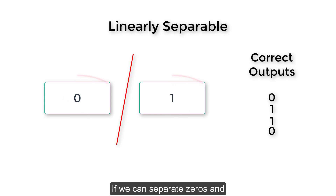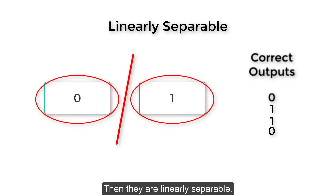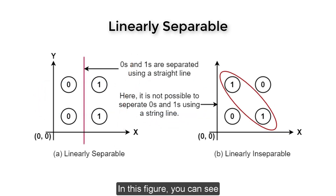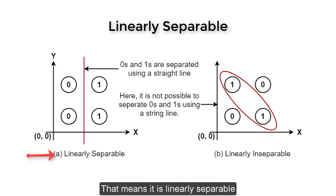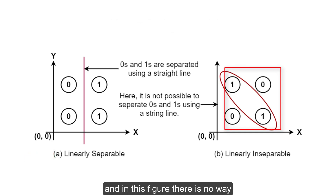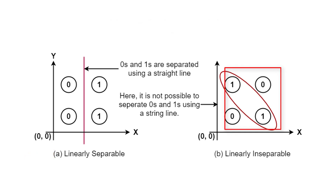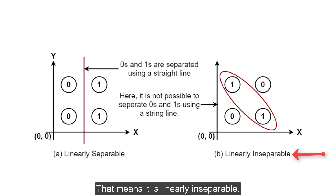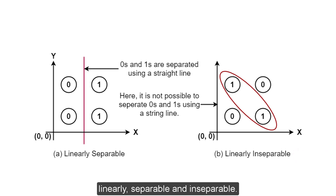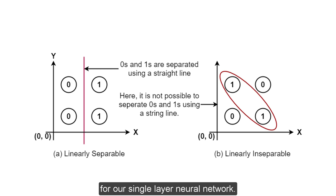If we can separate zeros and ones with a straight line, then they are linearly separable. In this figure you can see that zeros and ones can be separated using a straight line - that means it is linearly separable. In this other figure there is no way to draw a straight line to separate the zeros and ones; we must use a complicated curve to separate them, which means it is linearly inseparable. We will use this concept to identify the reasons for the incorrect output in our single-layer neural network.